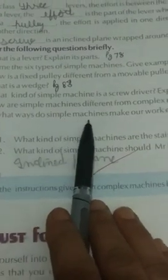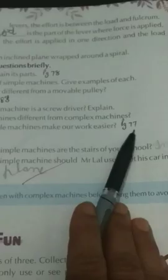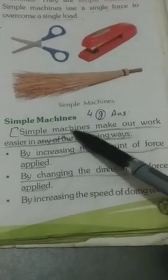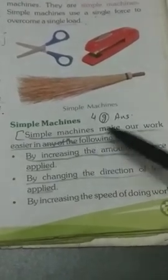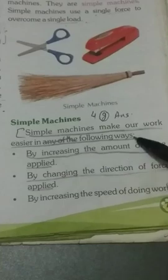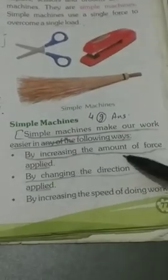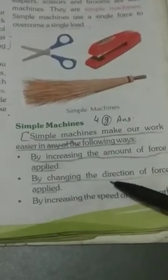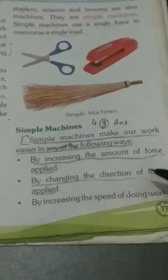Part G: In what ways do simple machines make our work easier? See page number 77. Simple machines make our work easier in the following ways: one, by increasing the amount of force applied; second, by changing the direction of force applied; third, by increasing the speed of doing work.